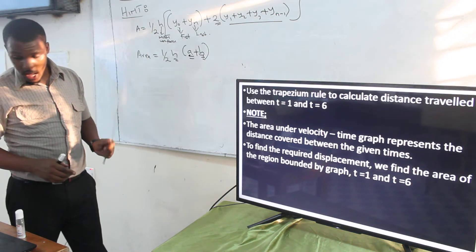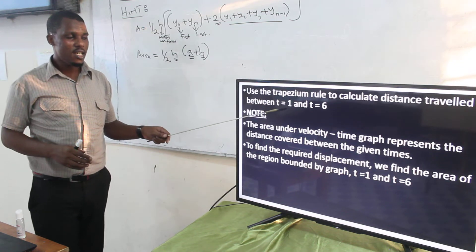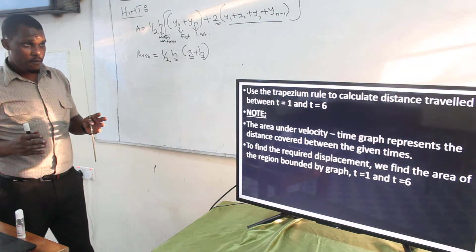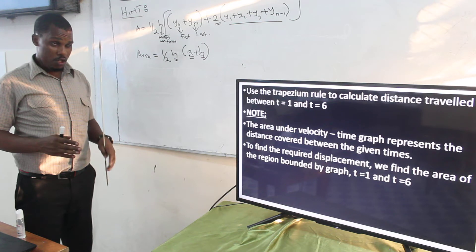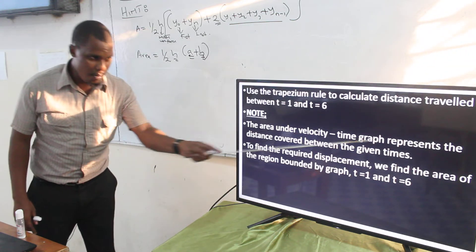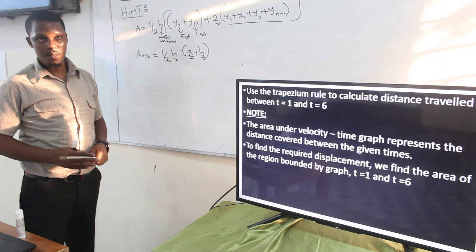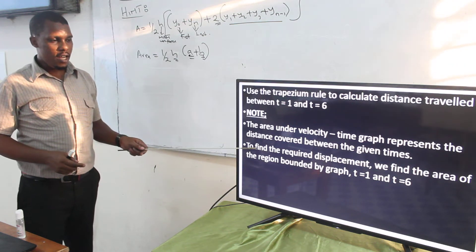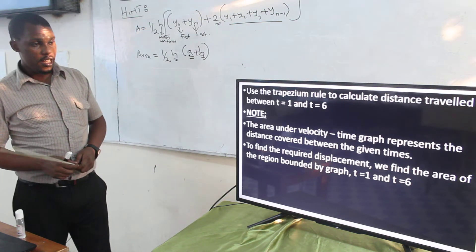Remember in our table the time goes from 0 up to 6. But we are telling you to calculate the distance travelled between t = 1 and t = 6. Remember that in the case of the velocity-time graph, if you need to calculate the distance covered by the motor vehicle, you need to calculate the area under the graph. The area under the velocity-time graph represents the distance covered between the given times. To find the required displacement, we find the area of the region bounded by the graph at t = 1 and t = 6.